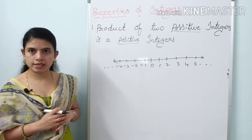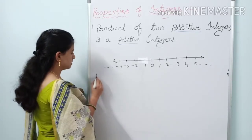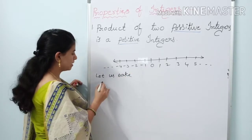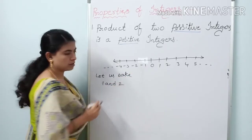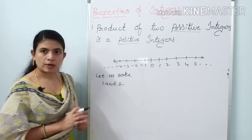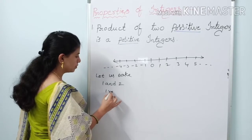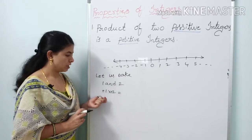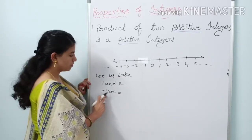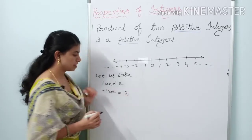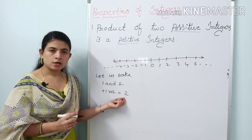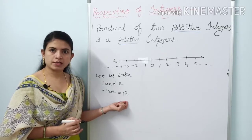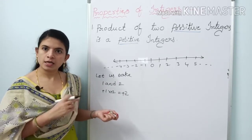Let us take any two positive integers — 1 and 2. Applying multiplication: plus 1 into plus 2 equals 2. This is a positive integer. Plus into plus gives plus. So plus 2 is a positive integer. The product of two positive integers is a positive integer.